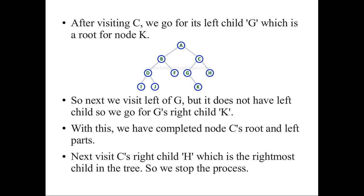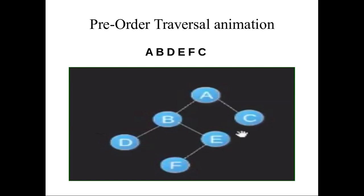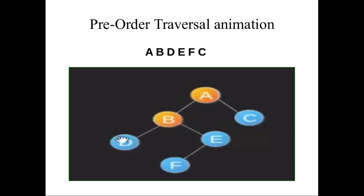To make it more clear, here is an animation for the preorder traversal with a binary tree having six nodes. In this tree, A is the root node, which has to be visited first. So A will be visited first and marked as visited. A has B and C as the left and right children. Next, B is the root node for D and E, so B will be visited first.